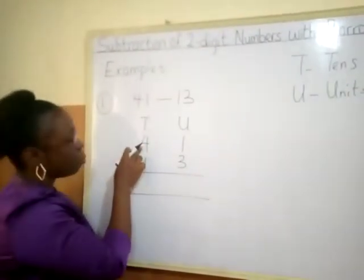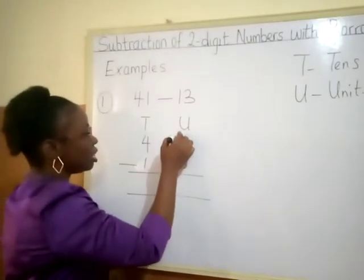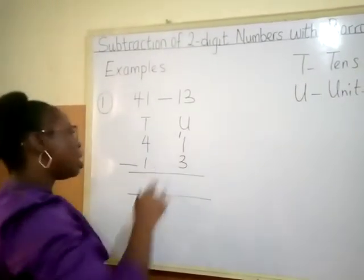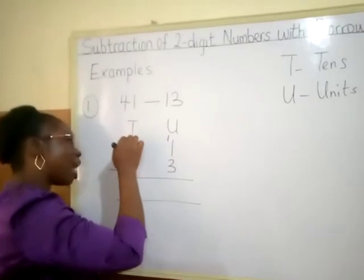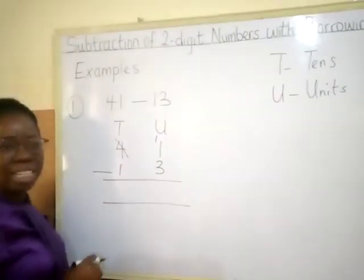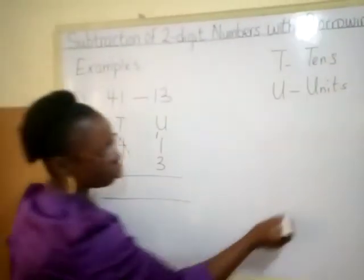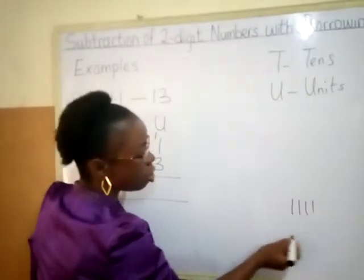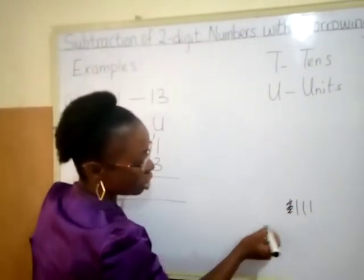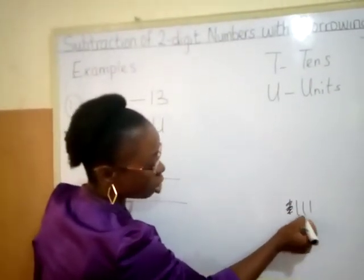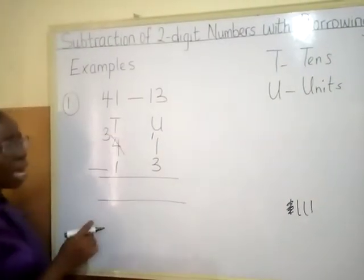So I'll come to this place and borrow one. I'll bring it here. This one becomes 11. Now look at this four — I have borrowed from there, so it will not be four again. Since I've borrowed, I had four: one, two, three, four. From that four I borrow one, so it remains three. This one remains three because I borrowed one there.